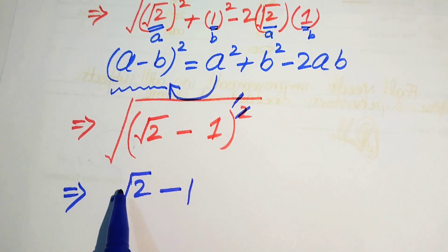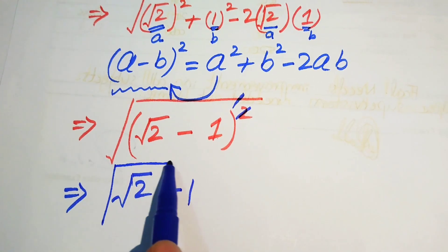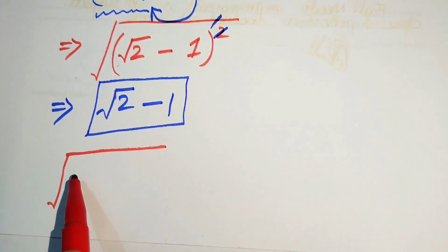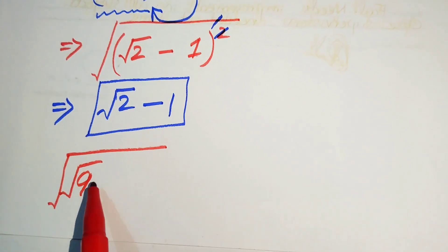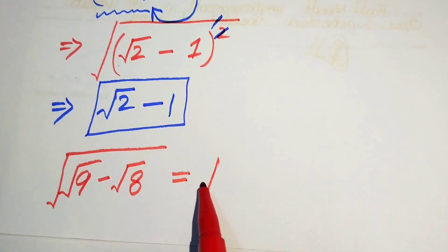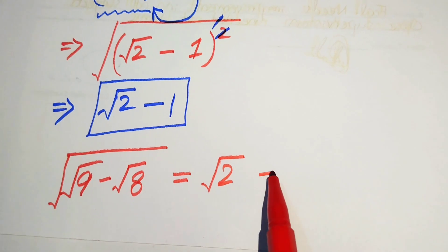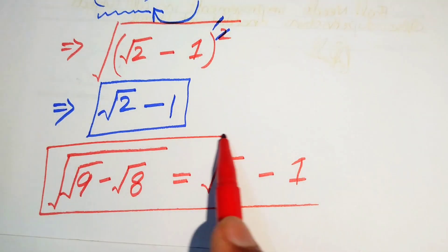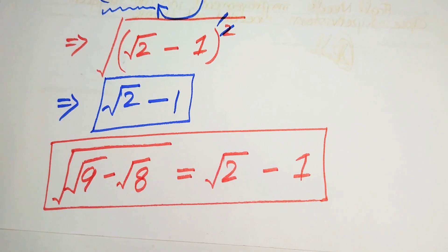This is the fully simplified form of the given expression. Finally, the simplified form of square root of square root of 9 minus square root of 8 is equal to square root of 2 minus 1. This is the final answer. Thank you so much for watching this video — please subscribe to my channel for more exciting videos.